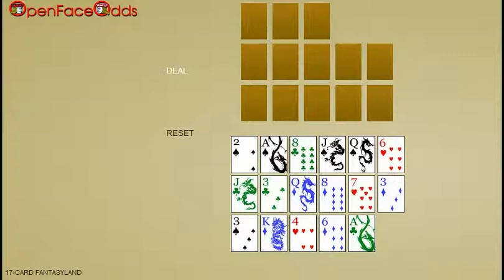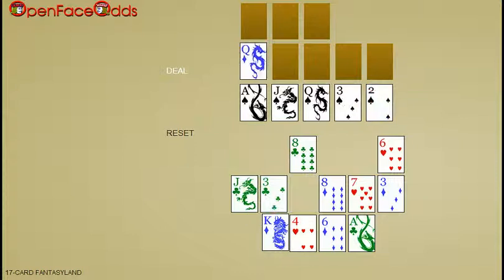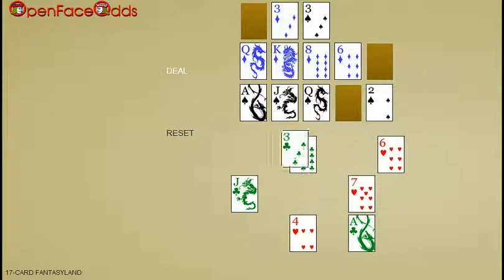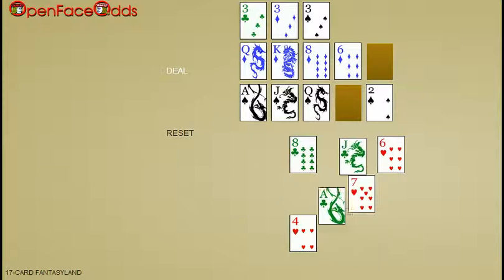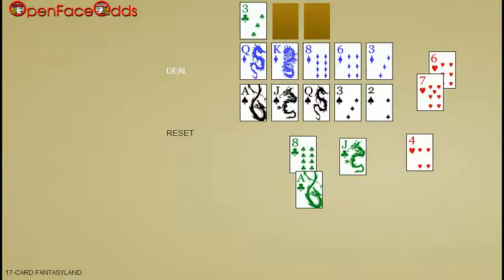Then this is the fourth hand and the streak stopped here. Got a double flush, a couple of threes. Tried the trip threes in front, didn't work out. So that's where it ends—three in a row.